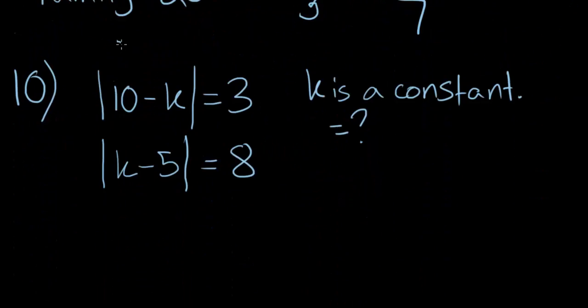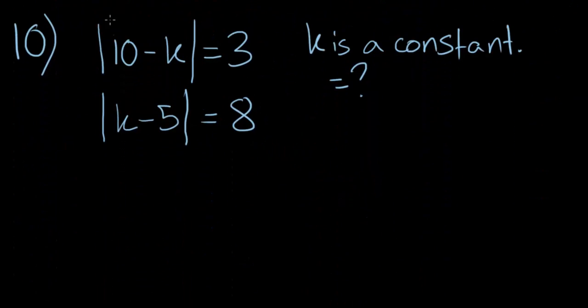So, moving on to the next problem here, number 10. There's two matrix equations, I like to call them matrices. So, the absolute value of 10 minus k is equal to 3, and the absolute value of k minus 5 is equal to 8. What is the value of k that satisfies both equations above? Now from that we can tell that k is a constant, because it's not going to change between the equations. So let's take the first equation here. By the way, there are many ways to deal with absolute value equations. This is my way of dealing with them.